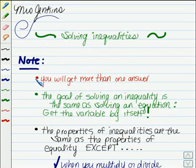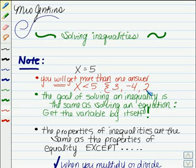First of all, when you solve an inequality, you will get more than one answer. When you solve an equation, you'll often get answers like x equals 5. But when you're solving an inequality, you're going to get an answer like x is less than 5, which can be a lot of different answers. Answers like 3, negative 4, 2, and there's an infinite number of answers. You see, you get more than one answer. x is any value less than 5.